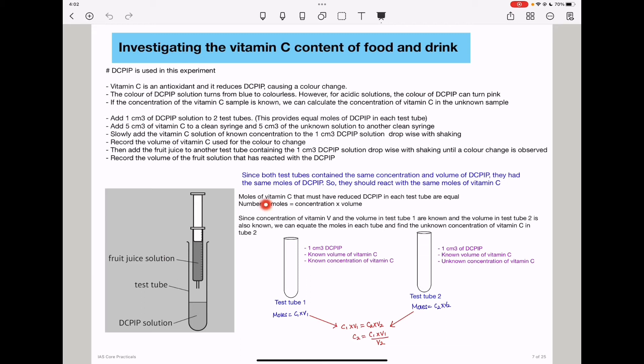So we can say number of moles is equal to concentration times volume. And since that is true, the moles that are reacted in this test tube are concentration 1 times volume 1, if this is test tube 1, and the moles here are concentration 2 times volume 2, because this is test tube 2. So, since these moles are equal, it means concentration 1 times volume 1 is equal to concentration 2 times volume 2. Therefore, I can equate them.